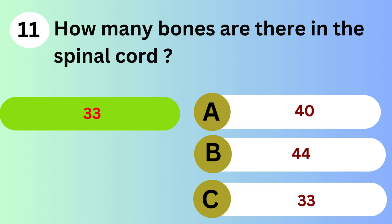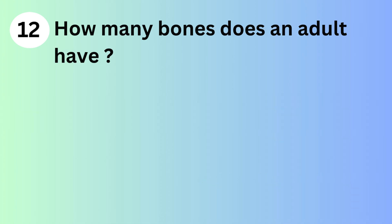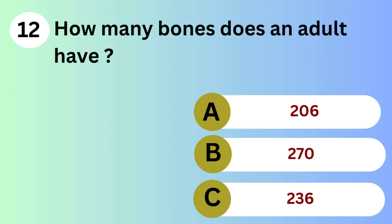Answer is C. 33. How many bones does an adult have? A. 206. B. 270. C. 236.